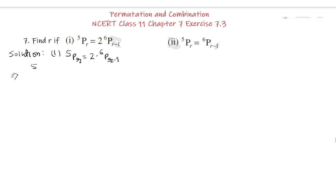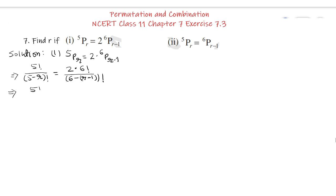5PR can be written as 5 factorial upon (5 minus R) factorial, equal to 2 into 6P(R minus 1), which can be written as 6 factorial upon (6 minus (R minus 1)) factorial.